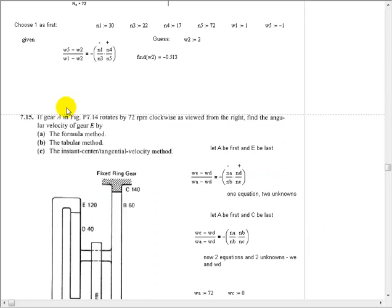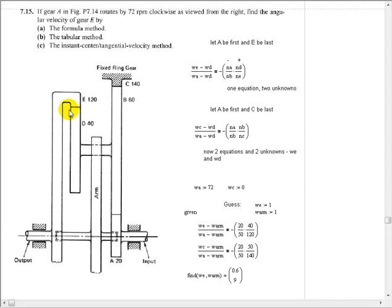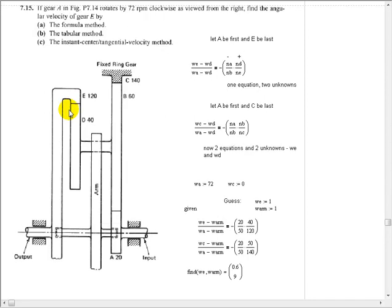The next problem, 7.15, is a little more sophisticated, because it ends up being a two-equation, two-unknown problem. And so, again, we're going to solve it by the formula method. And we are given the speed of gear A as 72 RPM. And then we are given, and we notice that this fixed ring gear, of course, has a velocity of 0. And we don't know the speed of the arm, and we don't know the speed of gear E.